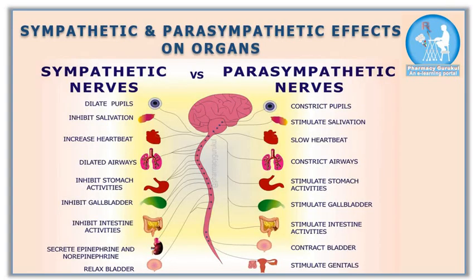Now let's discuss the sympathetic and parasympathetic effects on organs. Sympathetic effects on pupils: due to sympathetic effects, pupils are dilated to help you see longer distances. In parasympathetic response, your pupils are constricted as you are in rest-and-digest condition. In sympathetic response, production of saliva is inhibited — that's why you feel your mouth and throat are dry. In parasympathetic response, the salivary gland is stimulated to produce more saliva.